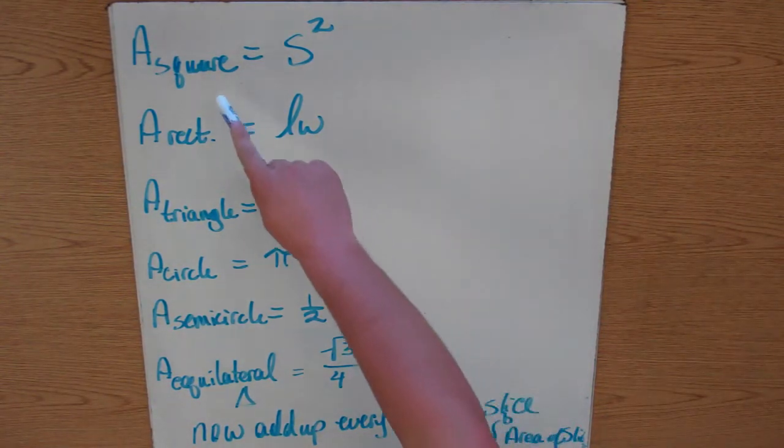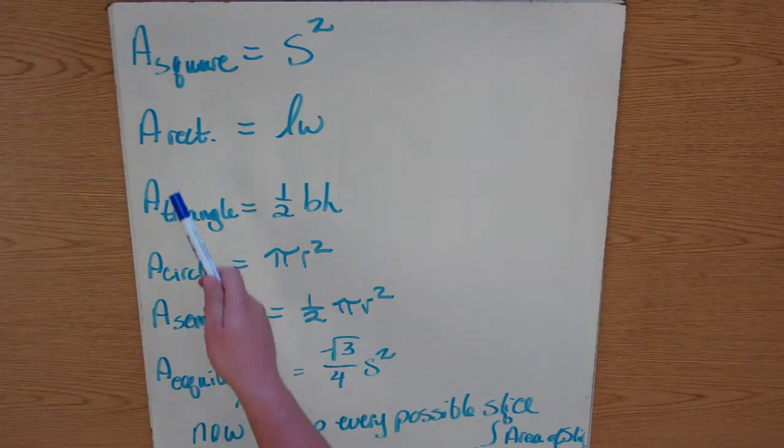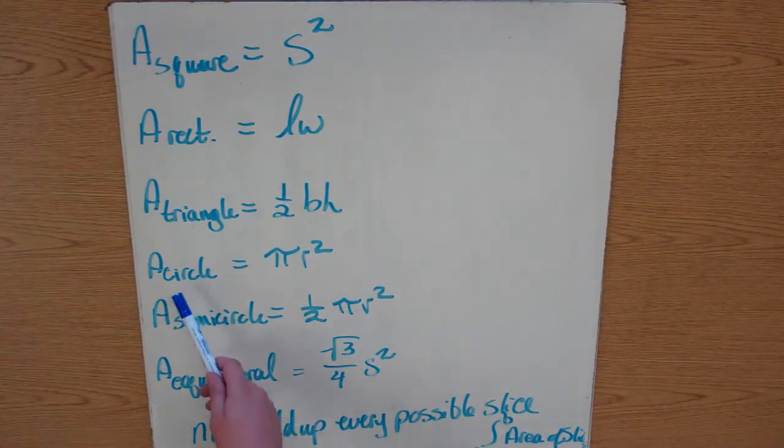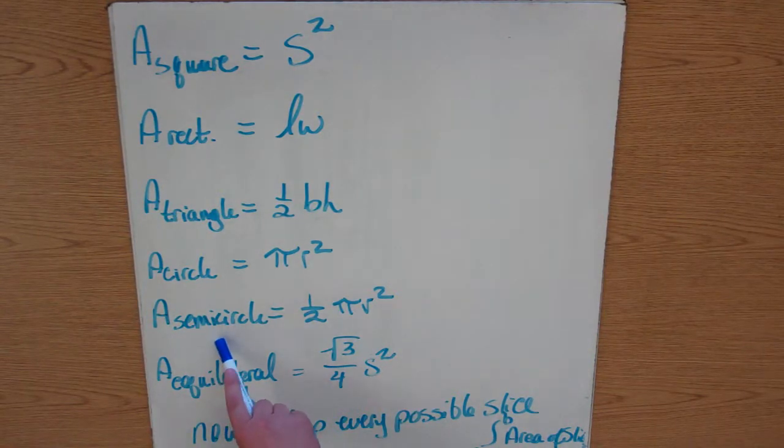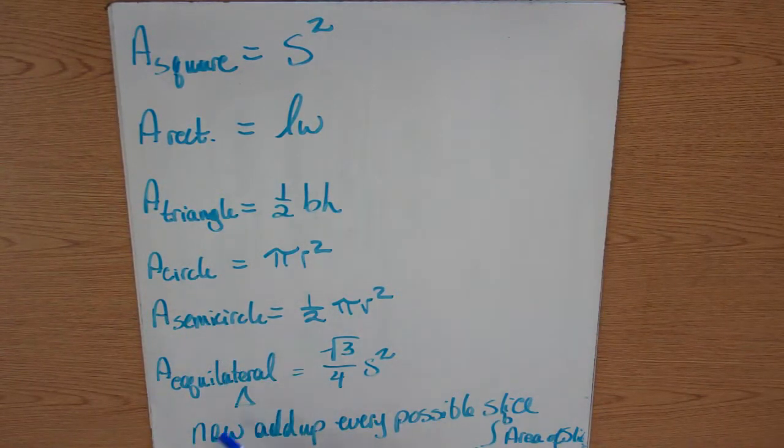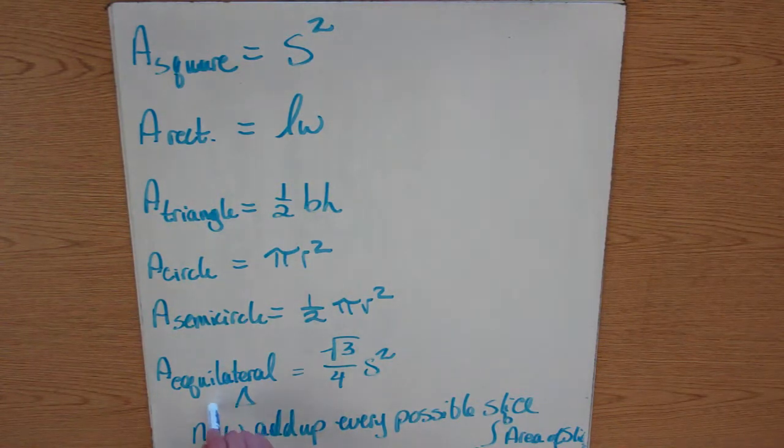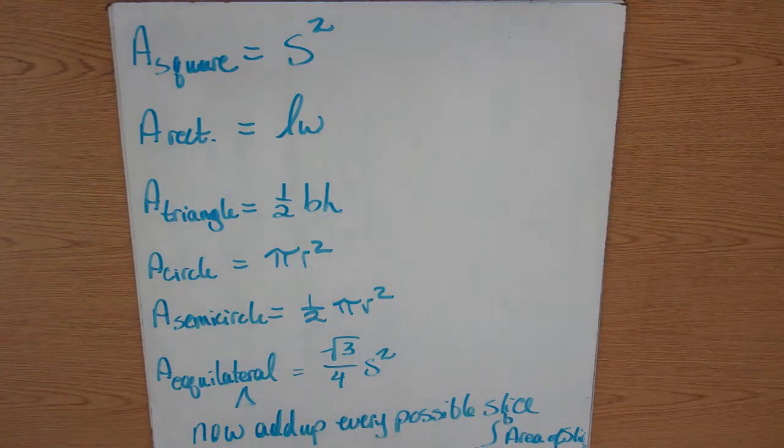If it makes a square, our area is going to be s squared. A rectangle, length times width. A triangle, one half base times height. A circle, which you should all be familiar with, pi r squared. A semicircle, remember a semicircle is half of a circle, so it's half of pi r squared. And then the area of an equilateral triangle is square root of 3 over 4 times s squared.